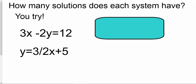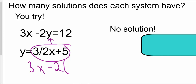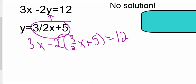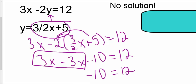Pause the video and try this one out. You should have ended up with no solutions. This time it has a y equals, meaning we replace the y in the first equation with the expression in the second. So it's 3x minus 2 times the quantity 3 halves x plus 5 equals 12. Distributing that negative 2 makes it negative 3x minus 10. We still have 3x out front, and that equals 12. Our x's cancel out, reducing to 0x's, which leaves us with negative 10 equals 12. That can never happen, which means this is no solutions — these two lines are parallel.